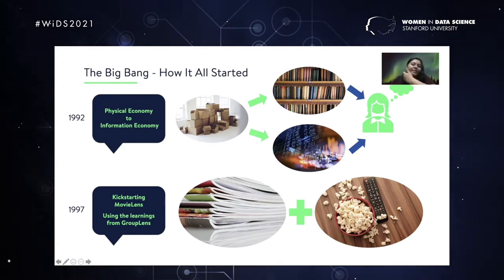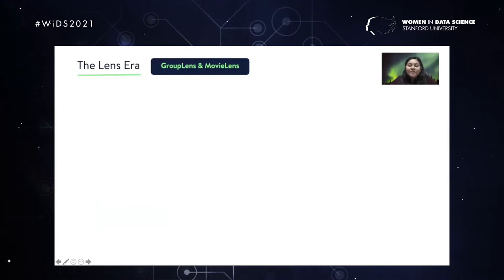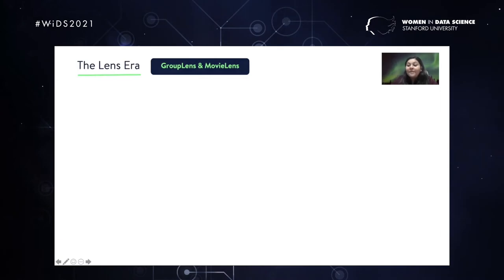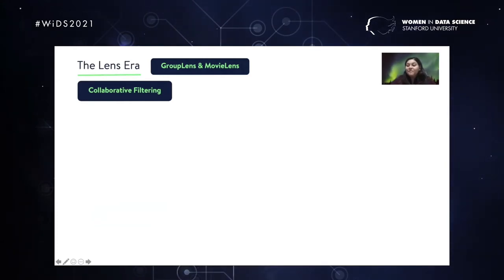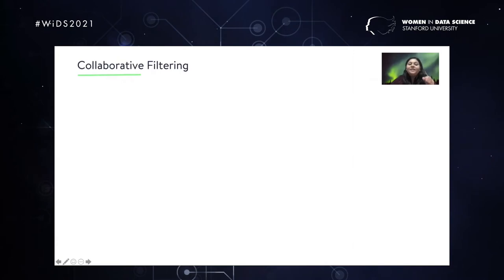This era was called the lens era, primarily because of the backend application of GroupLens, the backbone algorithm for which is known as collaborative filtering. Before we venture into what collaborative filtering means, let's try and understand a few of the terms associated with it, the first of which is called the user-item interaction matrix.